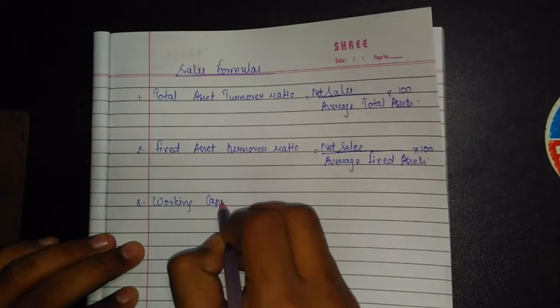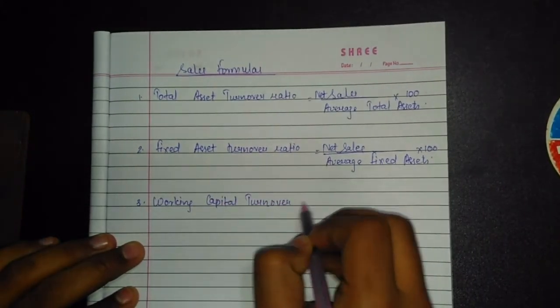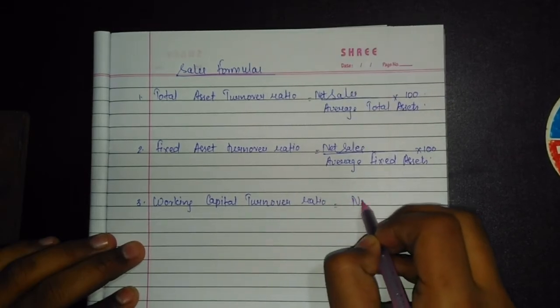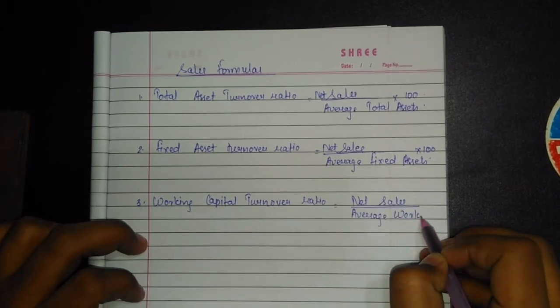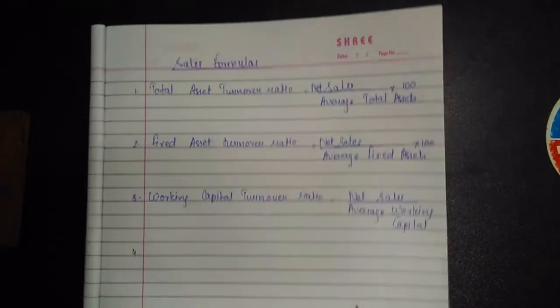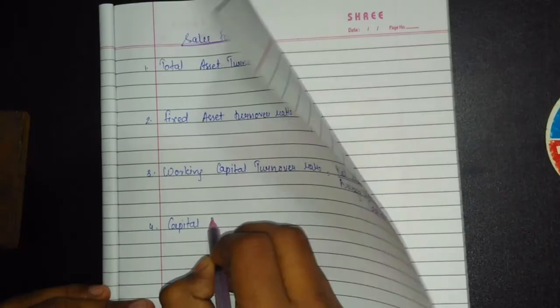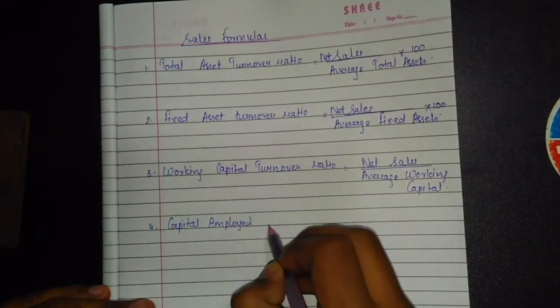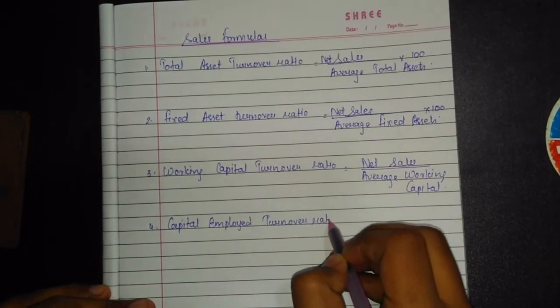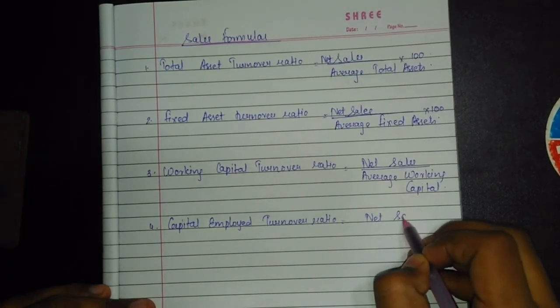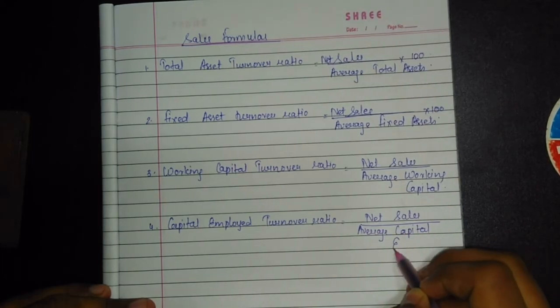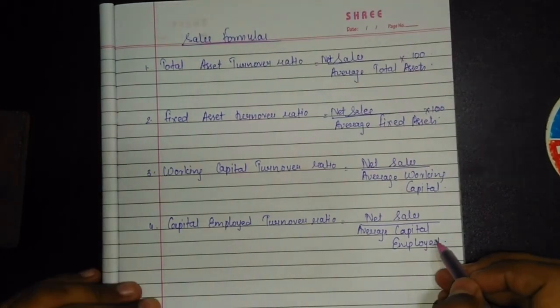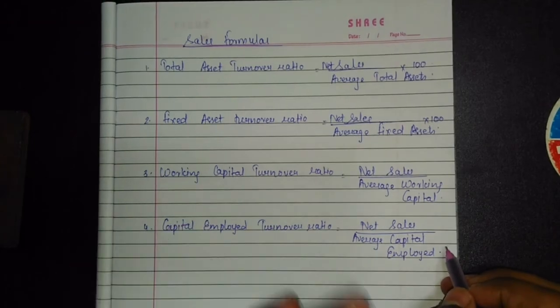Working Capital Turnover Ratio equals Net Sales divided by Average Working Capital. Capital Employed Turnover Ratio equals Net Sales divided by Average Capital Employed. These are all the turnover ratio formulas you need to know.